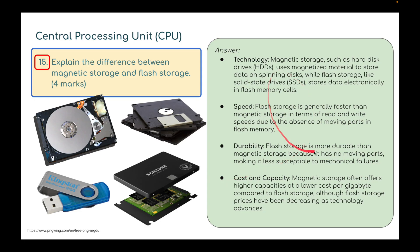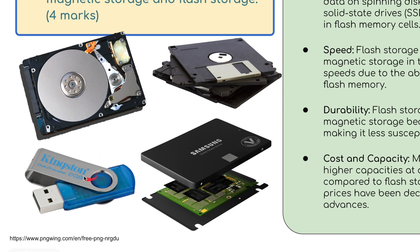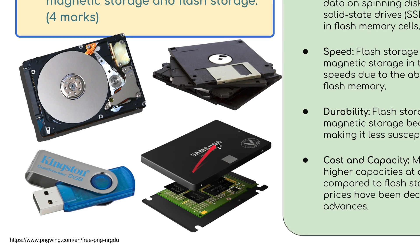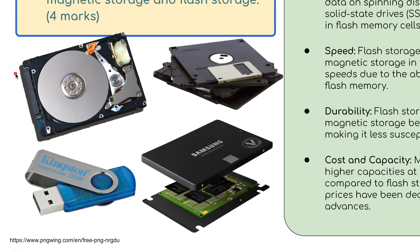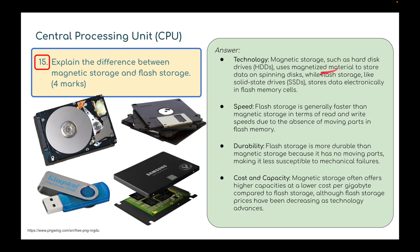Explain the difference between magnetic storage and flash storage. A flash drive or solid state disk uses a chip, whereas magnetic storage such as hard disk drives HDDs use magnetized material to store data on a spinning disk, while flash storage like SSD drives store data electronically in flash memory cells chips. That's the technology difference.